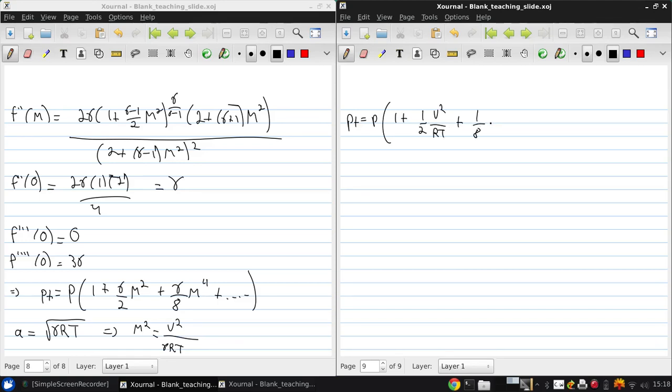Then we can write that P_t is P times (1 plus 1 half v squared over RT plus 1 eighth v to the 4th over RT squared) and continuing on. But using the ideal gas law, P is rho RT, so RT is just P over rho. So then we get that P_t is P times (1 plus 1 over 2 rho over P v squared plus 1 over 8 rho squared over P squared times v to the 4th), and again continuing on.